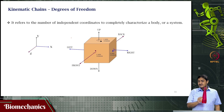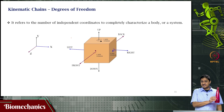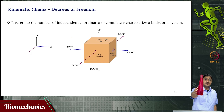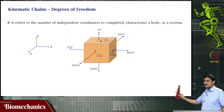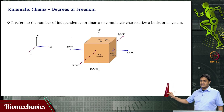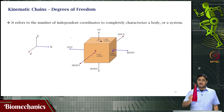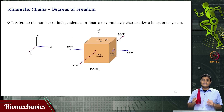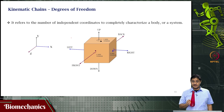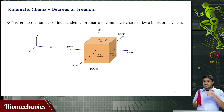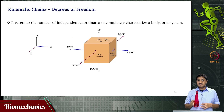The object can translate left or right, and also translate towards you or towards me — these are three translational degrees of freedom. Then about each of these axes, it can also rotate.